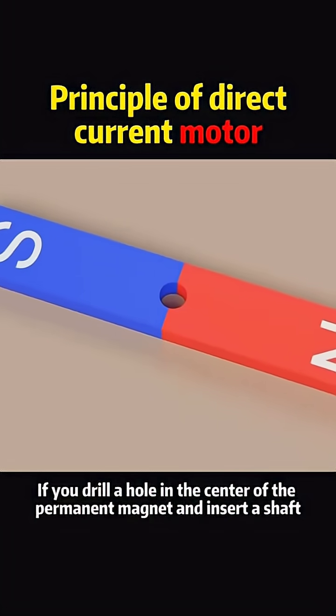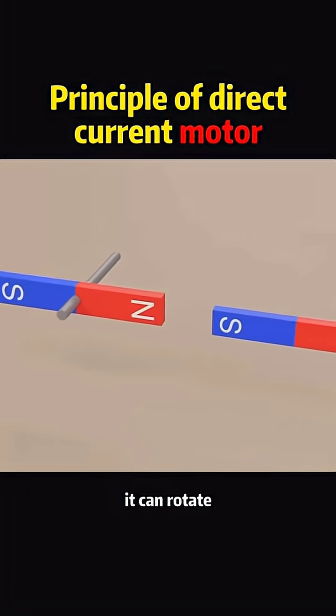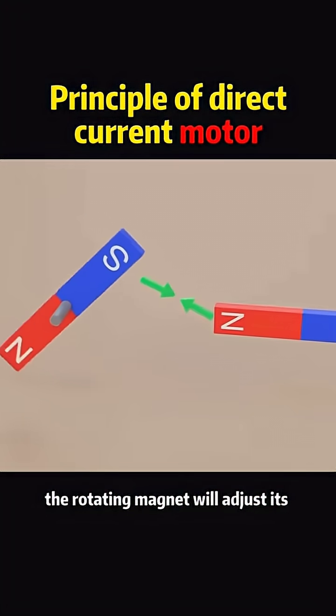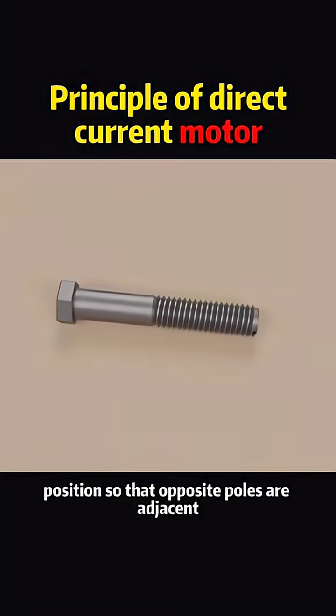If you drill a hole in the center of the permanent magnet and insert a shaft, it can rotate. When another magnet approaches, the rotating magnet will adjust its position so that opposite poles are adjacent.